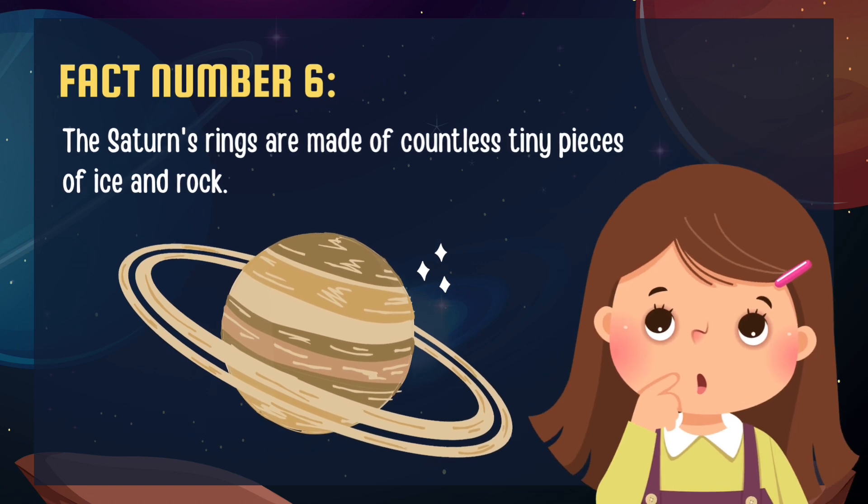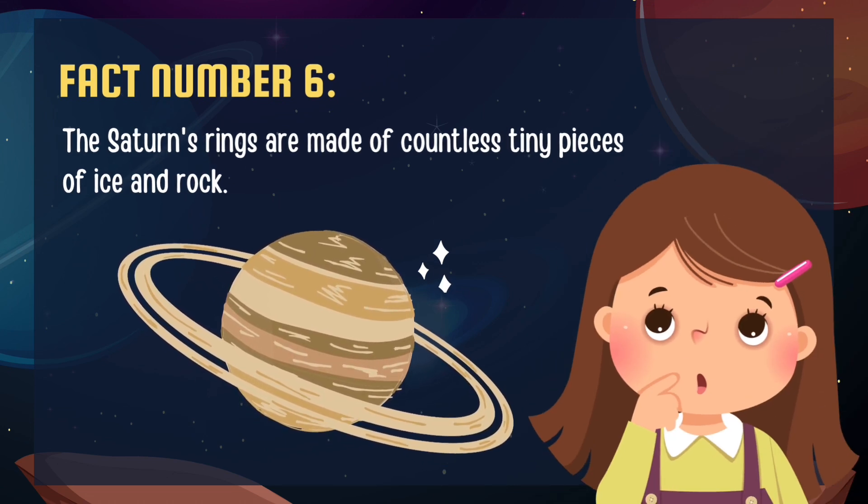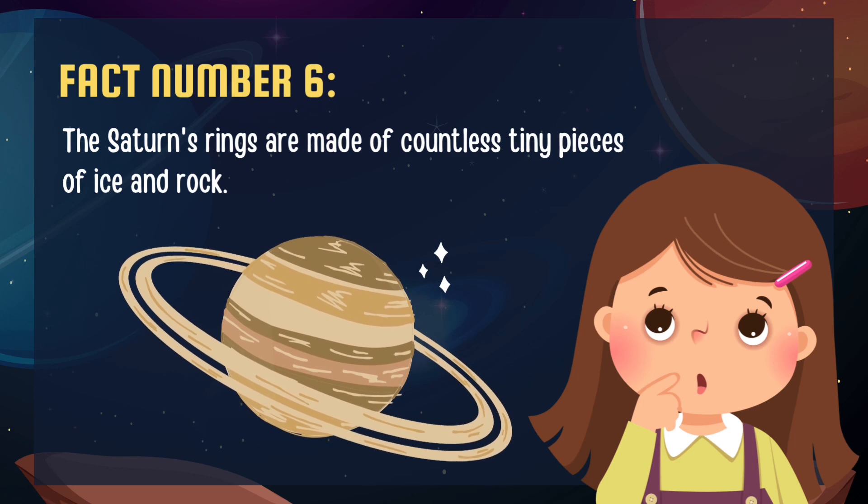Fact number 6 reveals the grandeur of Saturn's rings. They're not solid like hula hoops. They're made of countless tiny pieces of ice and rock.